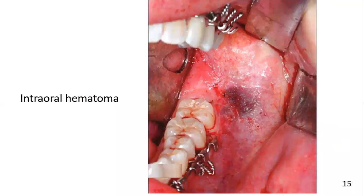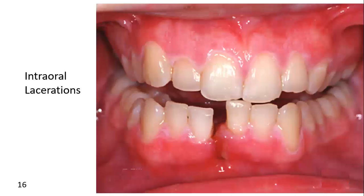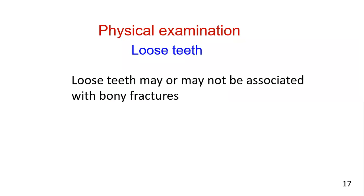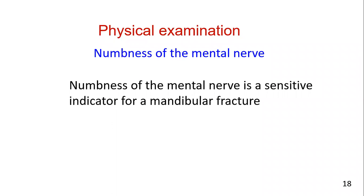A sublingual hematoma or other intraoral hematomas may indicate underlying bony fractures. Intraoral laceration of the gingiva usually indicates an underlying fracture. Loose teeth may or may not be associated with bony fractures. Numbness of the mental nerve is a sensitive indicator for a fracture through the mandibular area where the inferior alveolar nerve courses.